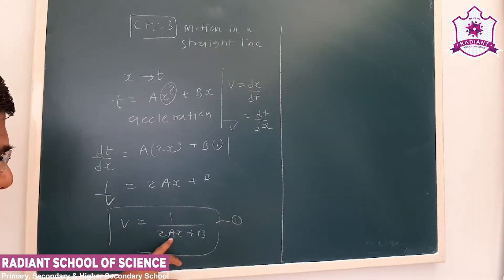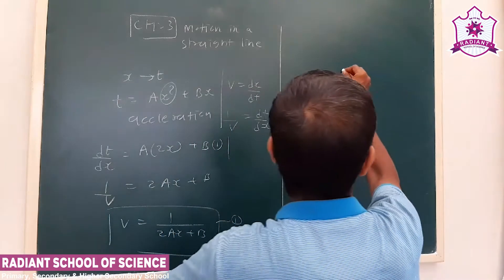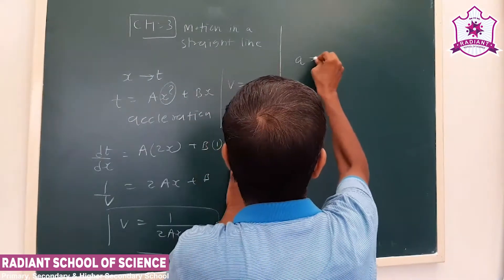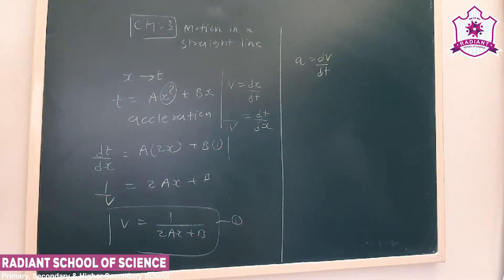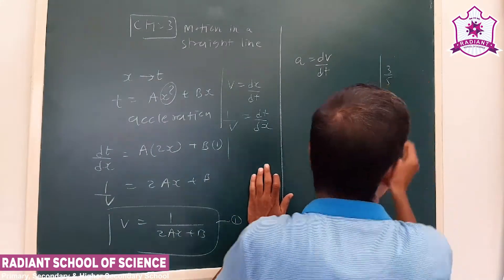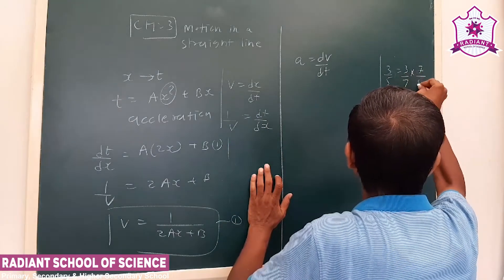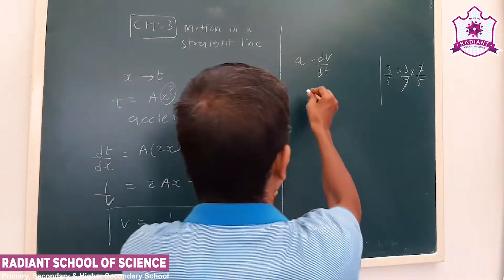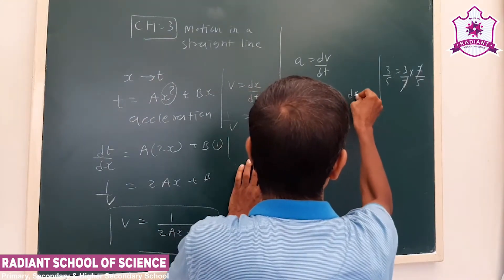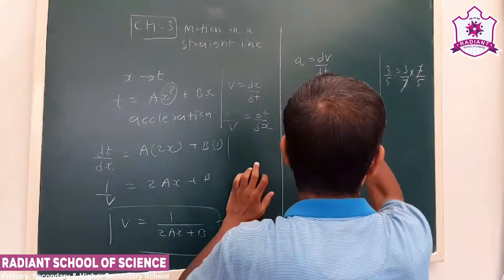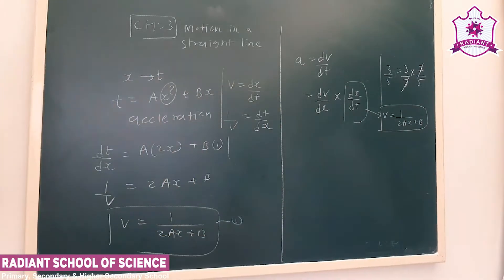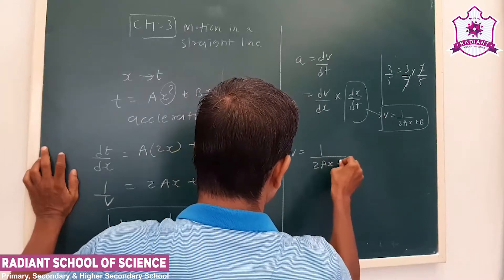In this equation we see there is no term related to t. Our acceleration is dv/dt, but there is no term with t, so we have to do something different. We know acceleration = dv/dt. We take the help of the chain rule from mathematics: dv/dt = (dv/dx) × (dx/dt). Here dx/dt is nothing but velocity, which we obtained as v = 1/(2ax + b).